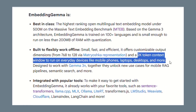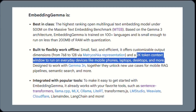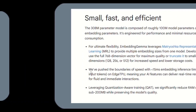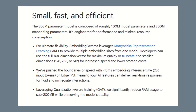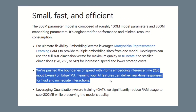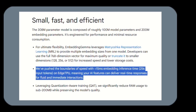Embedding Gemma has a 2K token context window, meaning it can process really long documents: research papers, legal contracts, technical manuals. The speed is insane — 15 milliseconds to generate embeddings, faster than you can blink. Most cloud models take hundreds of milliseconds plus network latency.